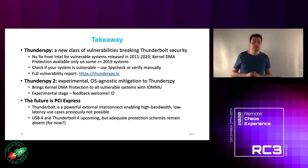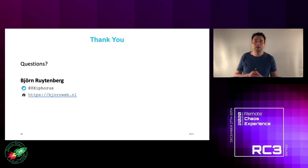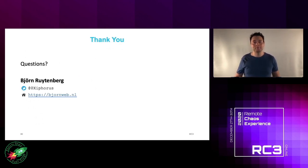The takeaway from tonight: ThunderSpy is a new class of vulnerabilities breaking Thunderbolt security. There is no fix from Intel, so check if your system is vulnerable using SpyCheck or by verifying manually. The full vulnerability report is published on our website. ThunderSpy 2 shows that kernel DMA protection can be patched onto previous systems that are technically capable but have not received firmware updates. The future is PCI Express whether we like it or not — this enables great use cases but several issues currently remain unaddressed. When USB 4 and Thunderbolt 4 arrive, I hope the issues mentioned here will have been addressed.